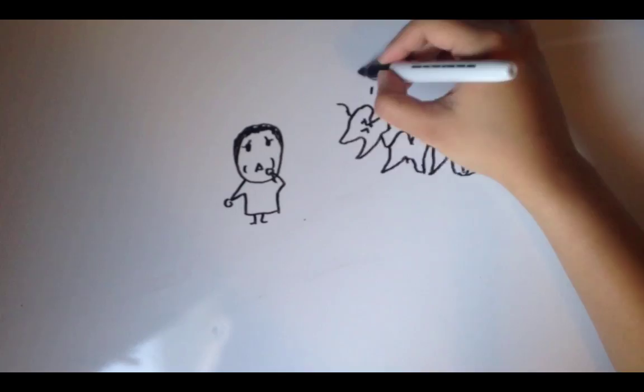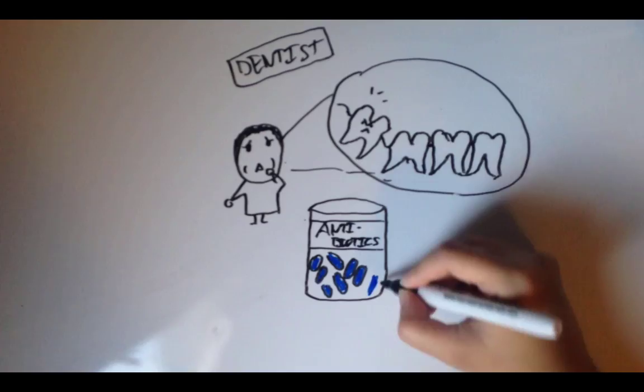Congratulations, you have survived having your wisdom teeth removed. Although you're sore and swollen, the doctor has prescribed you with painkillers and antibiotics so that you can get back to your normal self.